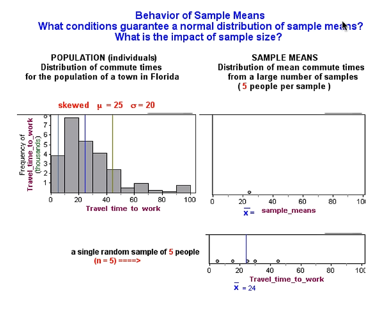In this final movie, we will finish our discussion of the behavior of sample means. In particular, we will investigate these two related questions: what conditions guarantee a normal distribution of sample means, and what is the impact of sample size?